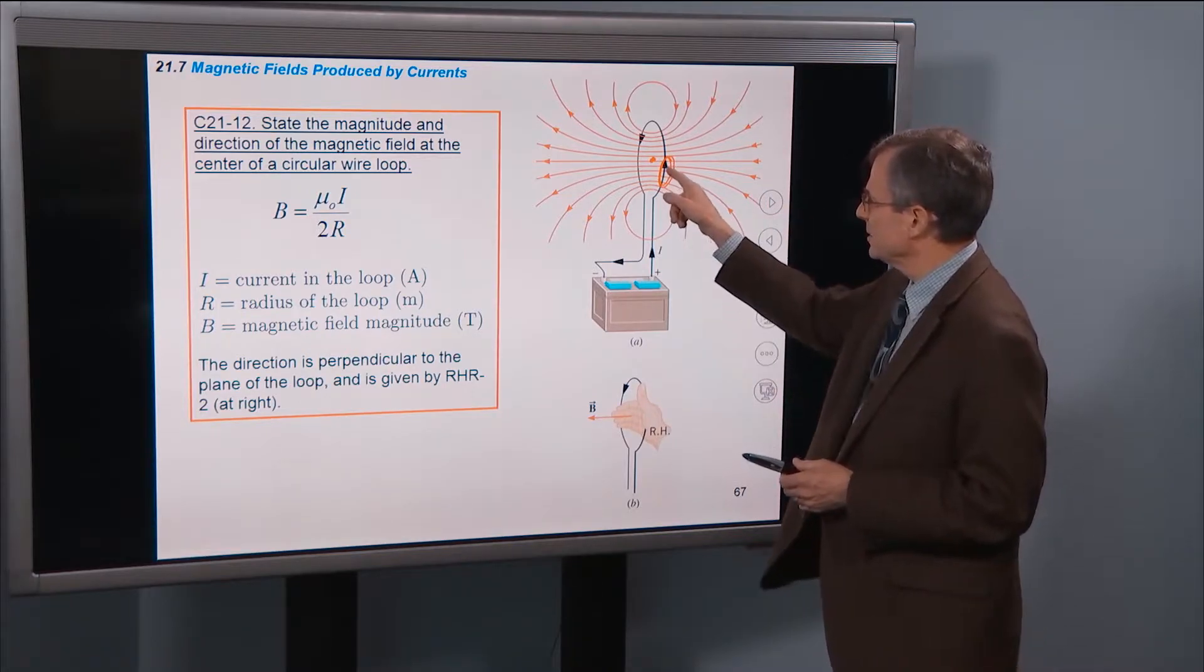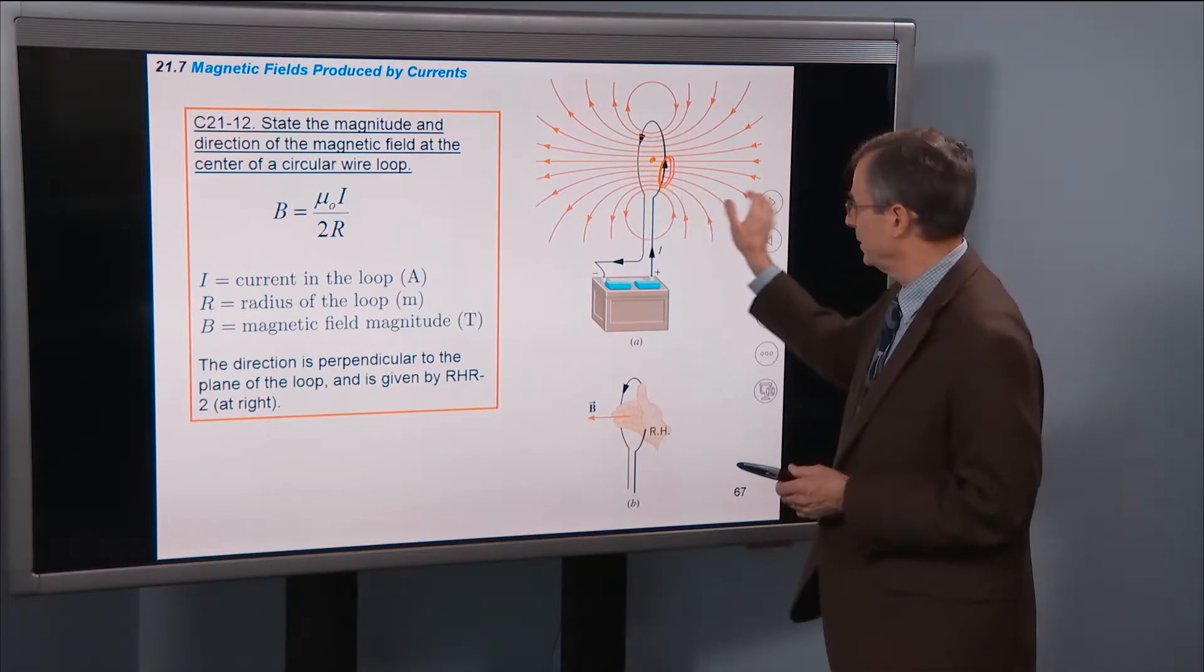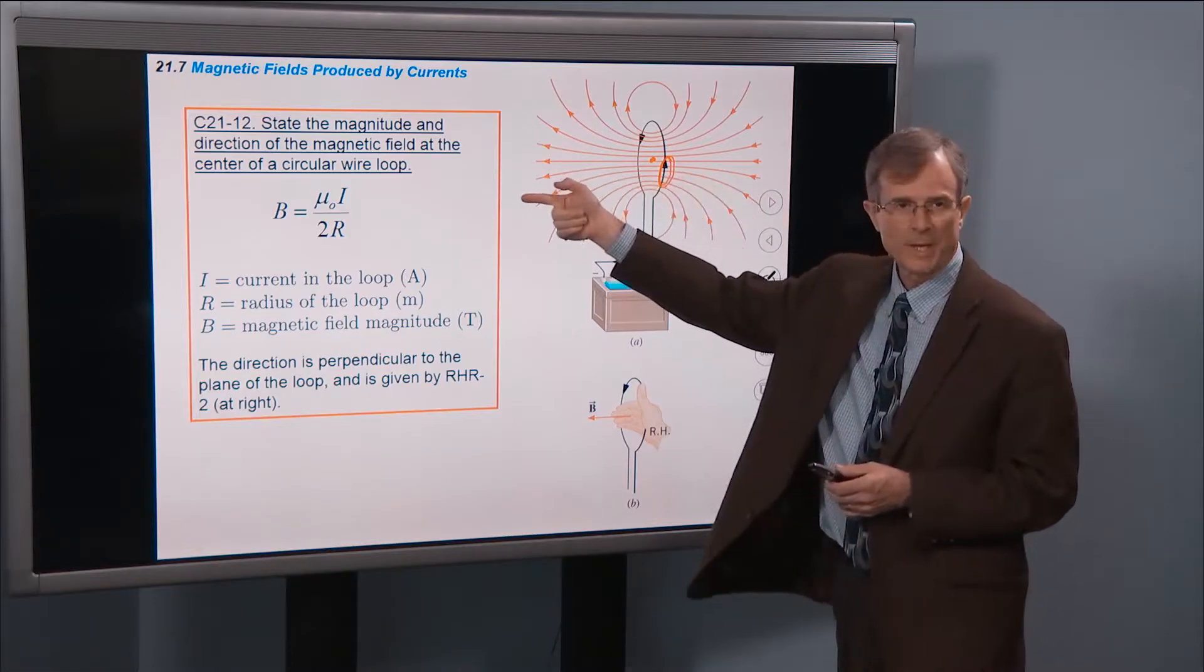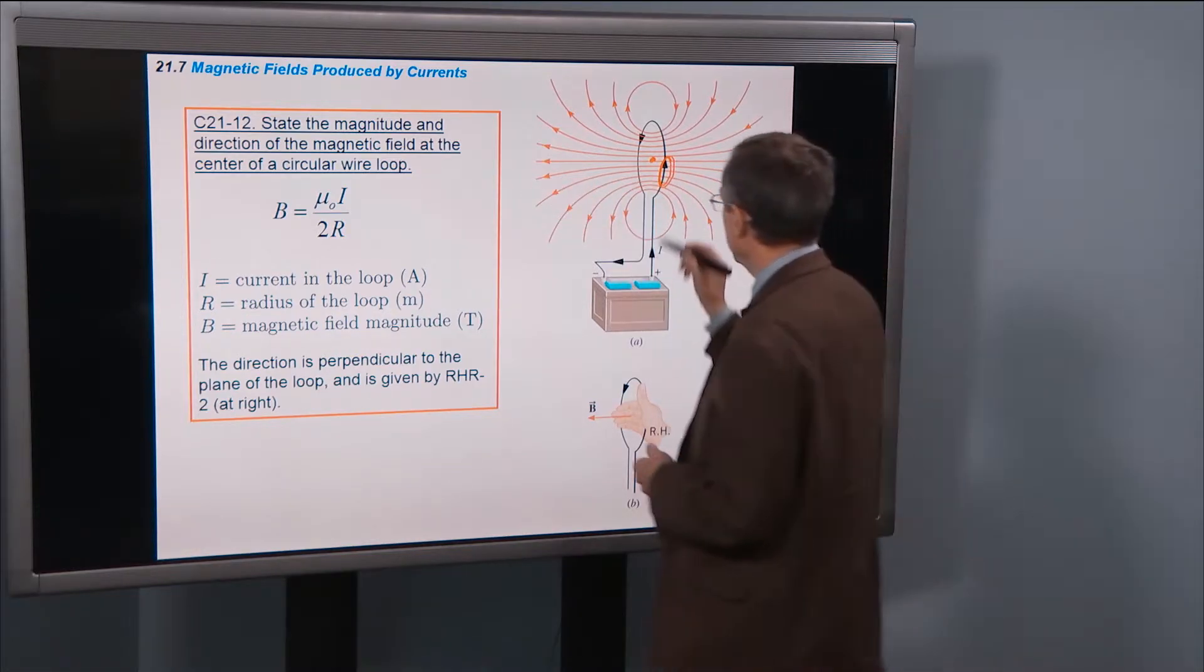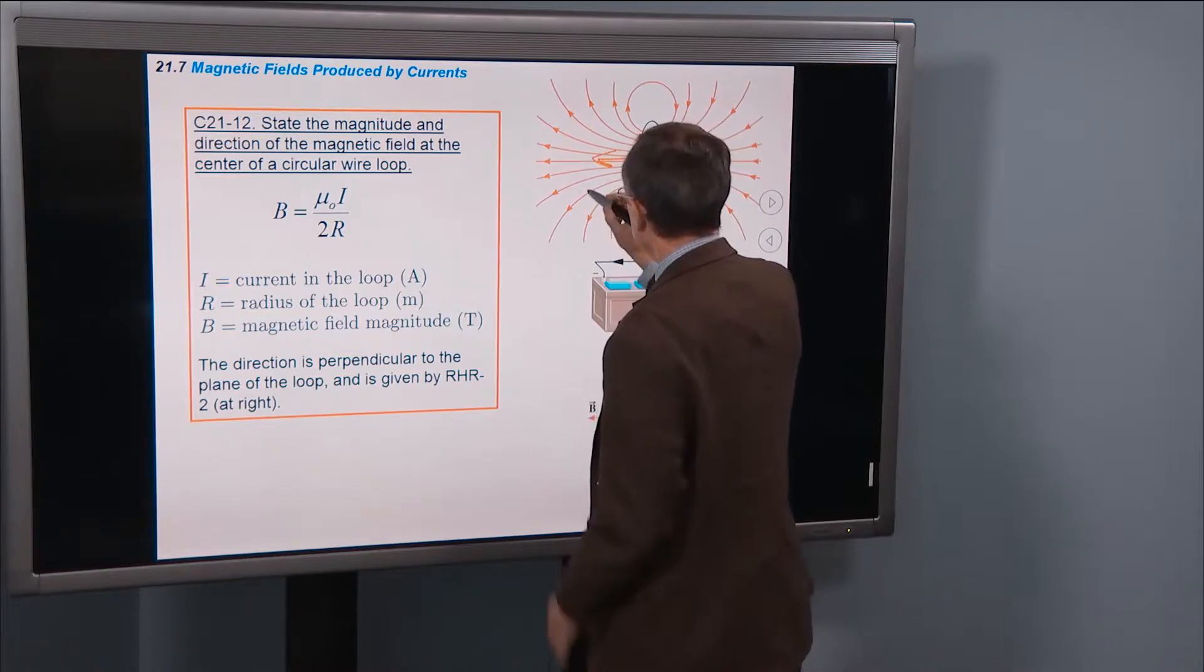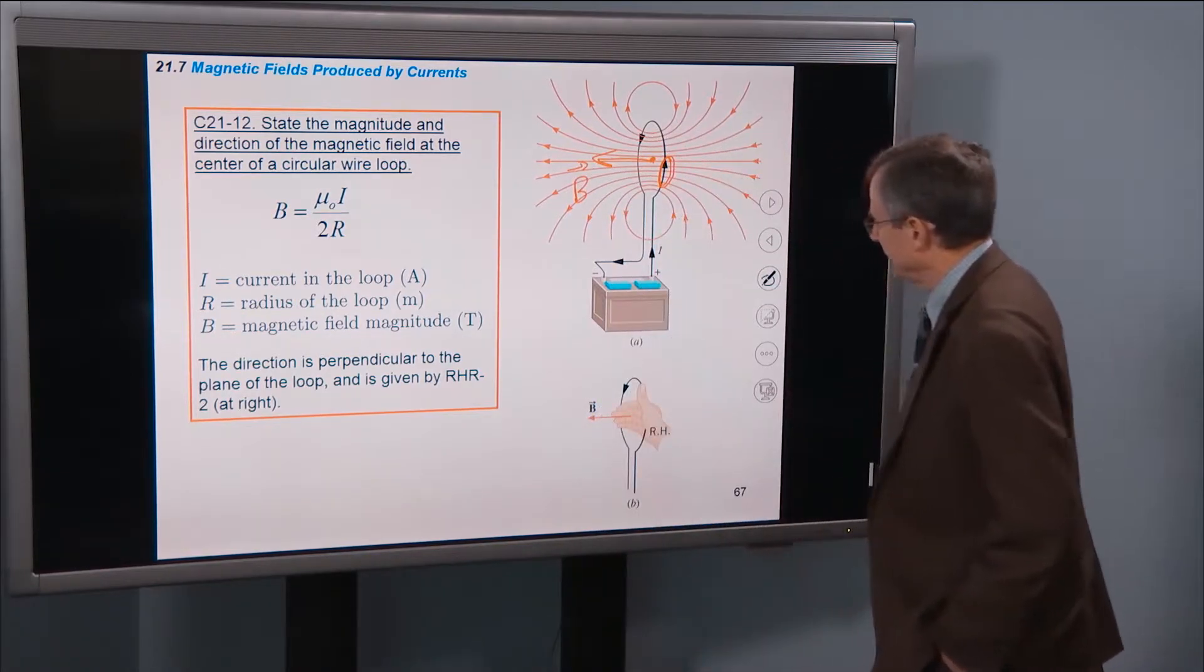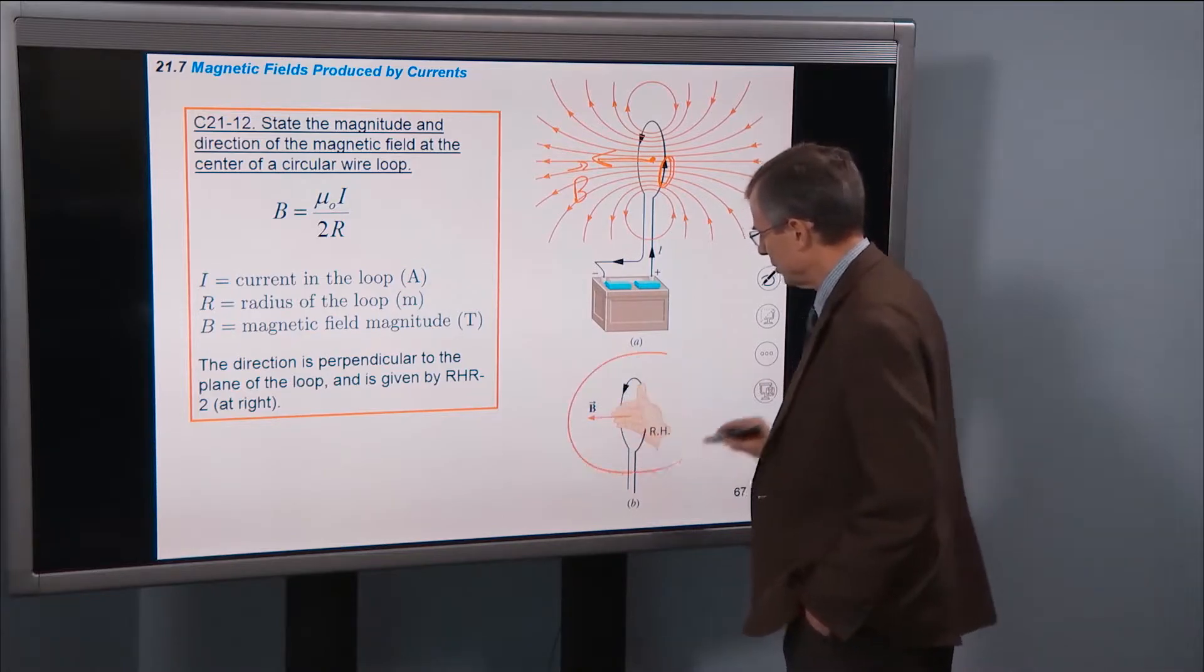Where your fingers intersect the center of the loop, your fingers will be pointing this way. So that tells you that the magnetic field must be in that direction. And this is shown here in this diagram.